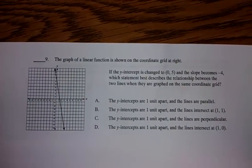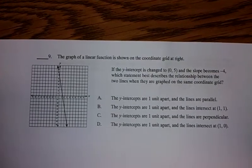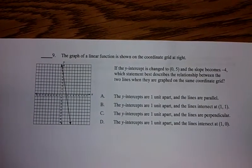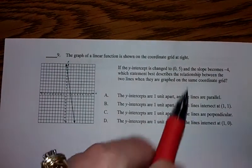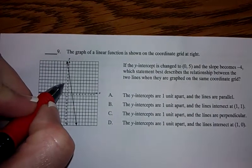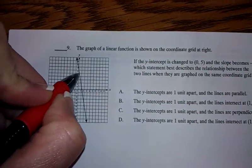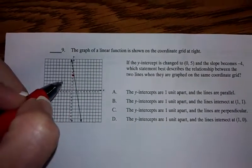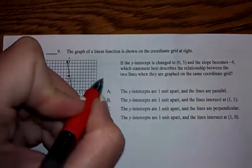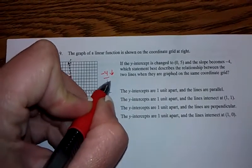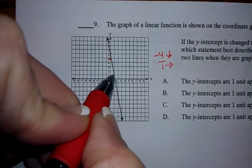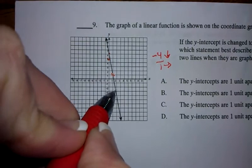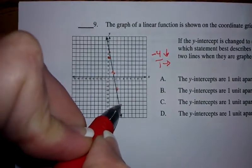The next problem, it says the graph of a linear function is shown on the coordinate grid. If the y-intercept changed to 5 and the slope became negative 4, which statement describes the relationship between the two lines if they are graphed on the same? So, okay. So, let's go and graph 0, 5. Let's see. 1, 2, 3, 4, 5 right here because the y-intercept is up a little higher. And the slope is negative 4. Negative 4 over 1 means to go down 4 to the right 1. So, right here, I'm going to go down 1, 2, 3, 4 over 1. 1, down 1, 2, 3, 4 over 1. 1, 2, 3, 4 over 1. Okay.